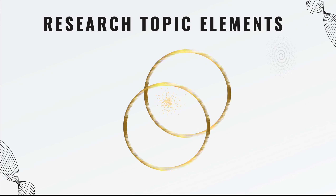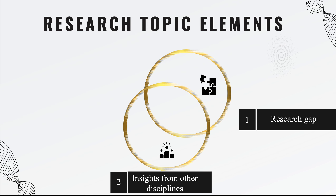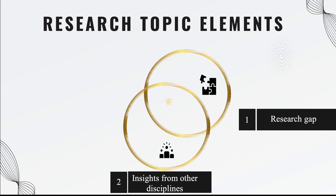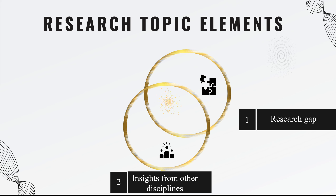The most important thing for the topic is its elements. A topic has three main elements. The first one is the research gap, which is the most important one. A research gap is a topic within the field where there is a lack of research — where existing studies are limited, or issues and questions remain unanswered or insufficiently addressed in the current literature.